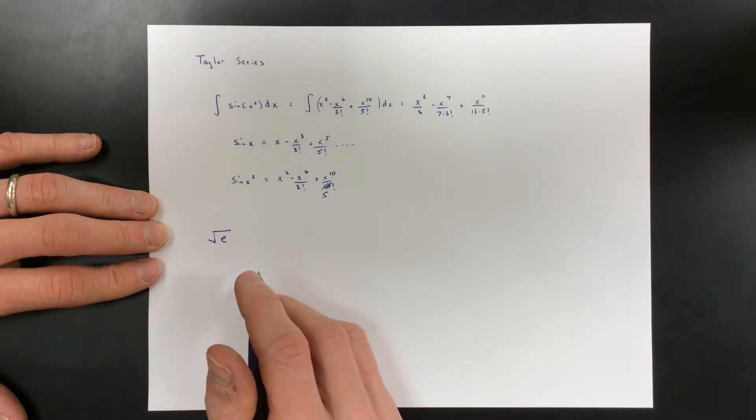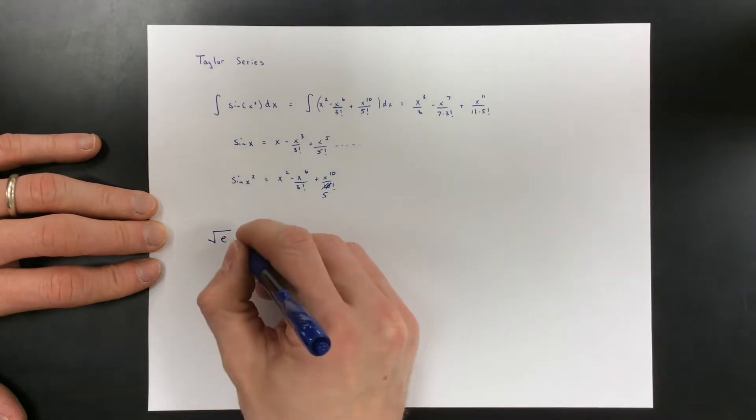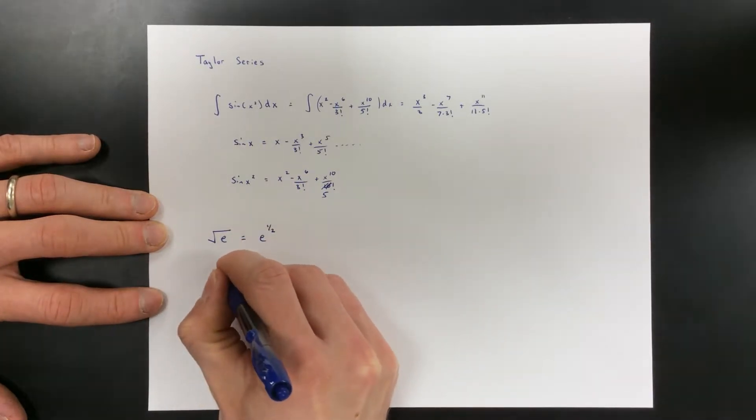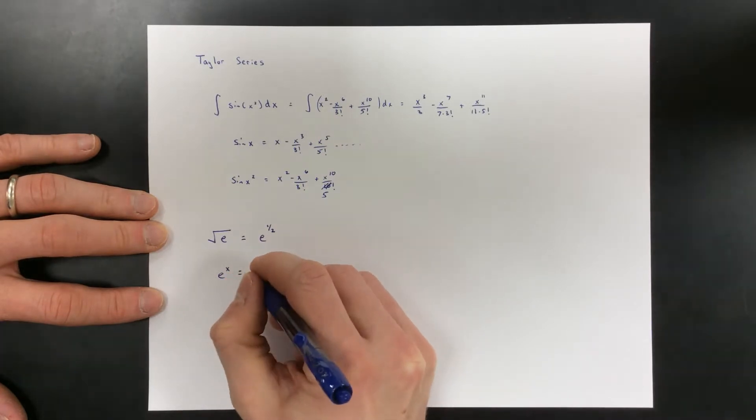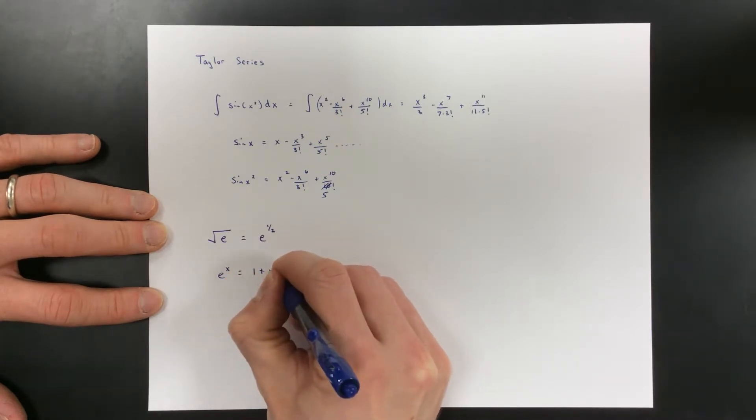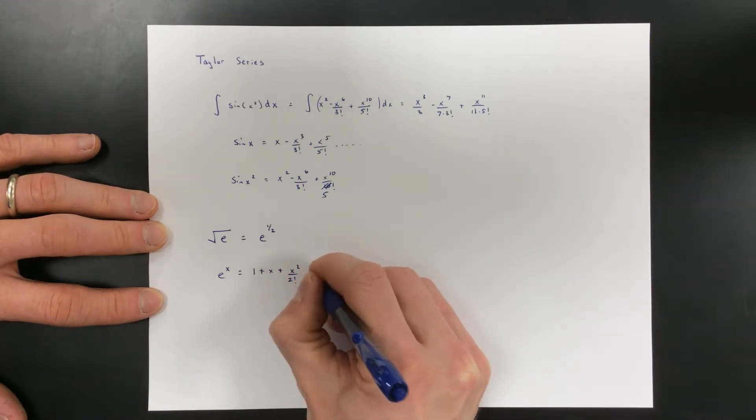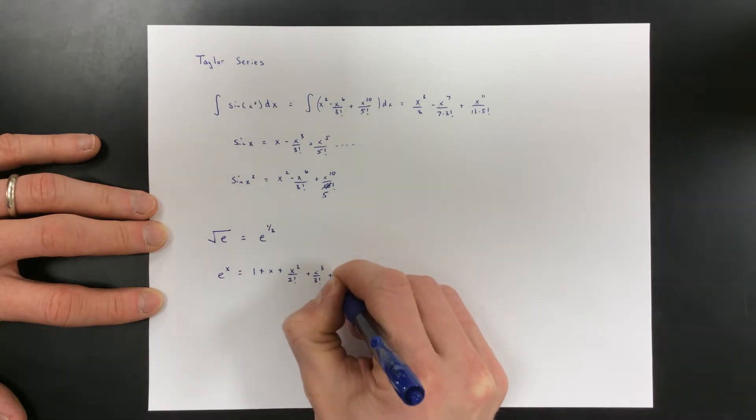But here's the trick: the square root of e is just e to the half power. And I know e to the x, the expansion of e to the x is 1 plus x plus x squared over 2 factorial plus x cubed over 3 factorial plus x to the 4th over 4 factorial.